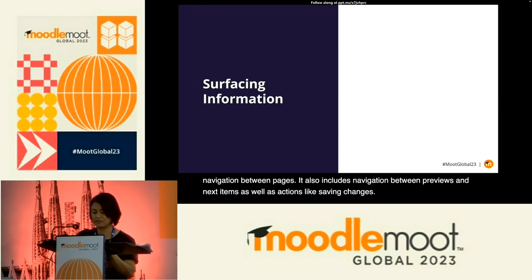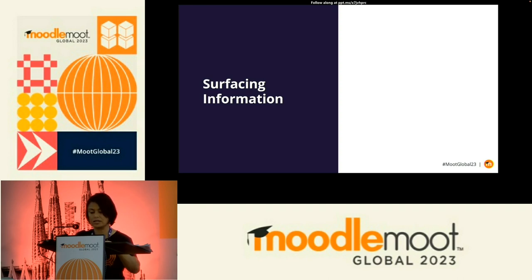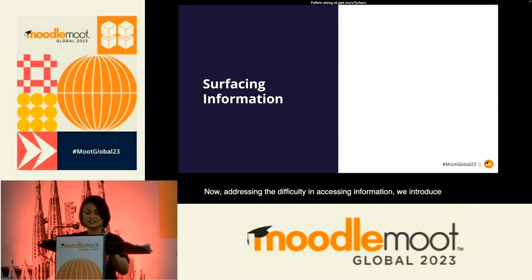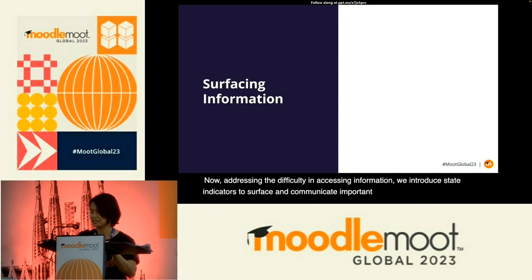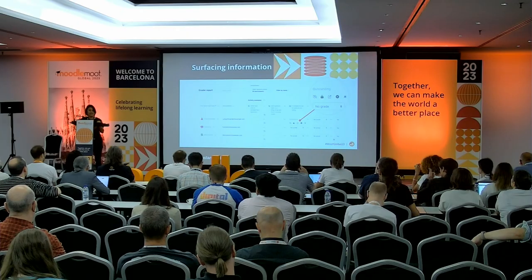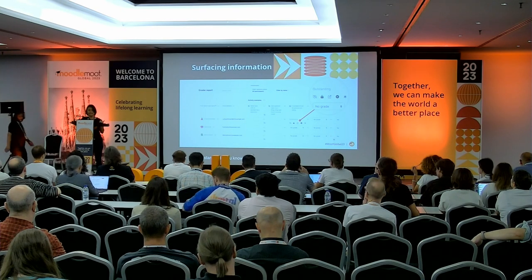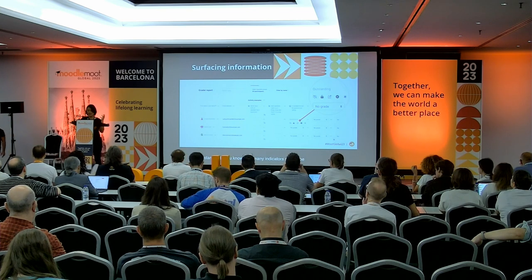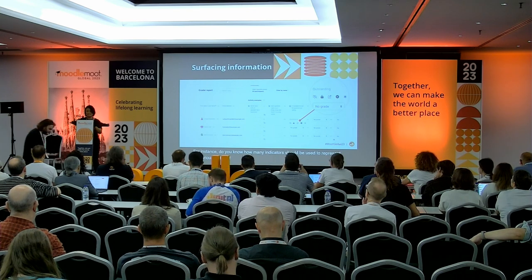Addressing the difficulty in accessing information, we introduced state indicators to surface and communicate important details without overwhelming users. For instance, do you know how many indicators are needed to represent the various states of a student's grade? A grade can be passed or failed, hidden, locked, overridden, excluded, or indicate whether feedback has been given. With this many states, our challenge was to display this information clearly without cluttering the screen.